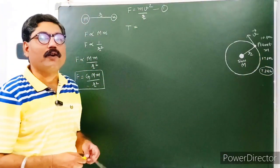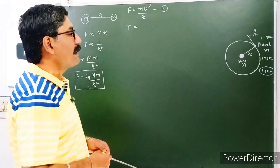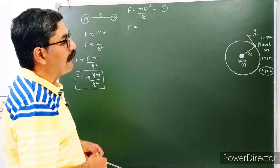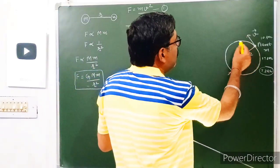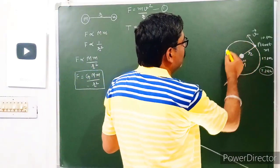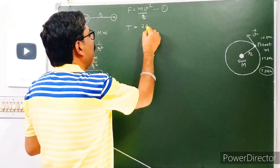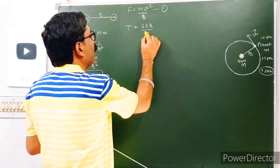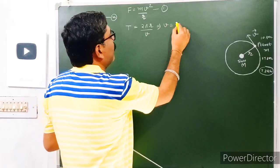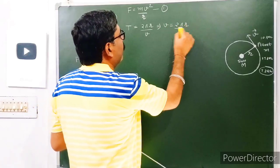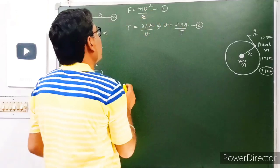That time period will be equal to distance divided by magnitude of velocity. The distance the planet covers in one revolution equals the circumference of the circular orbit, which is 2πr. The magnitude of velocity is V. So the value of V from here will be equal to 2πr/T. Now you can substitute this value of V into equation 2.